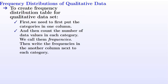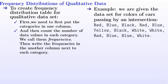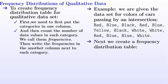For example, we are given a data set for colors of cars passing by an intersection — red, blue, black, red, and so on. Now we need to create a frequency distribution table out of this data.